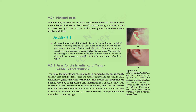Activity 9.1: Observe the ears of all the students in the class. Prepare a list of students having free or attached earlobes and calculate the percentage of students having each. Find out about the earlobes of the parents of each student in the class and correlate the earlobe type of each student with that of their parents. Based on this evidence, suggest a possible rule for the inheritance of earlobe types. The rules for inheritance of such traits in human beings are related to the fact that both the father and the mother contribute practically equal amounts of genetic material to the child, meaning each trait can be influenced by both paternal and maternal DNA.